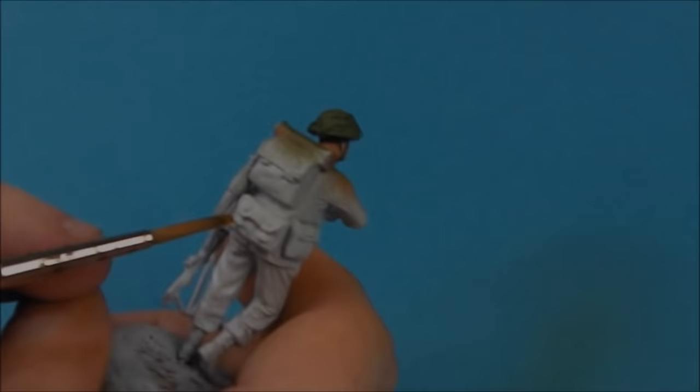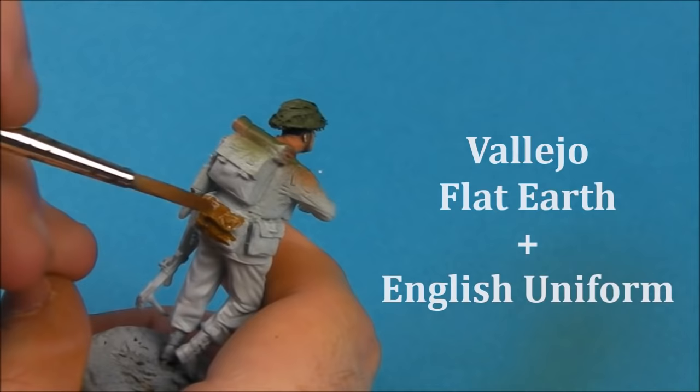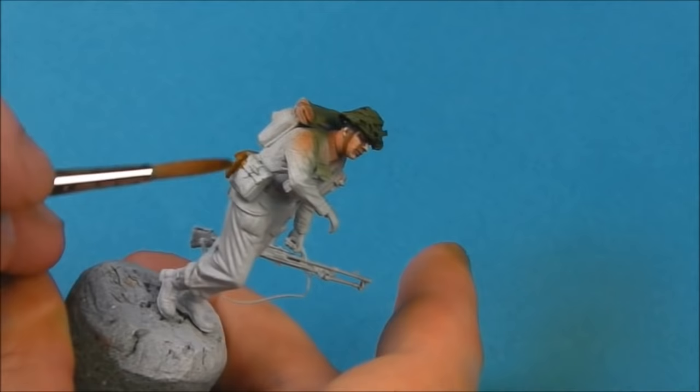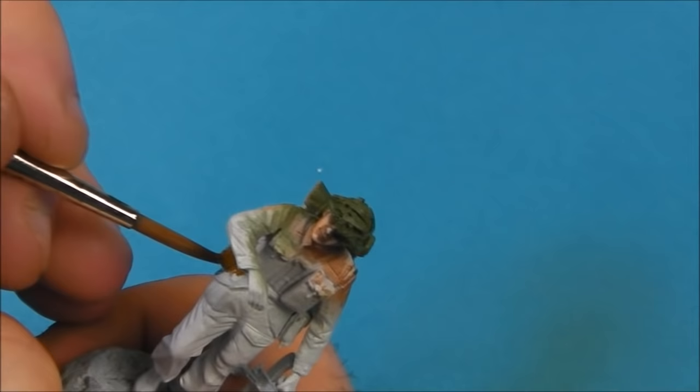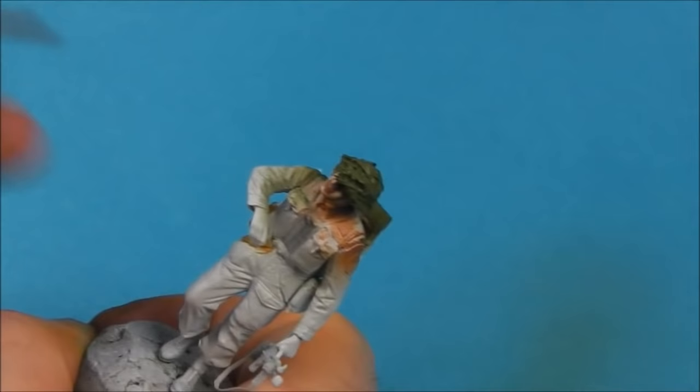We're going to start work on his Assault Jerkin, or Assault Vest. We're going to take some Vallejo Flat Earth and some English Uniform. I'm going to put just one or two drops of English Uniform into my Flat Earth mix to get this kind of dark khaki or canvas color. I'm going to thin this down with a drop or two of water and start applying it with a paintbrush. In this case, I'm using a number four round Windsor Newton Cotman.